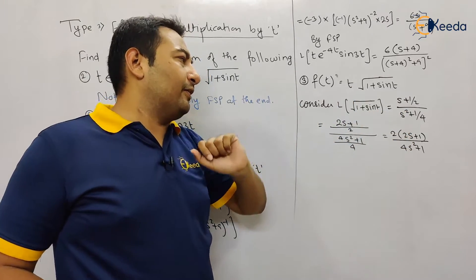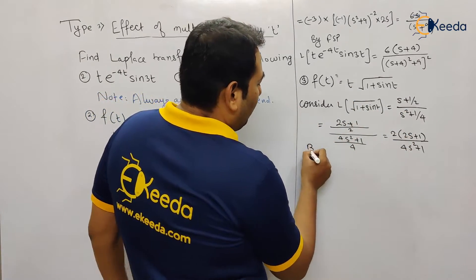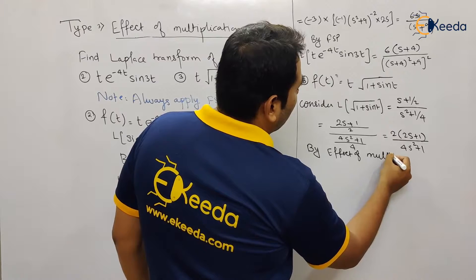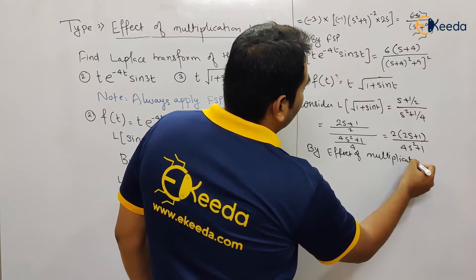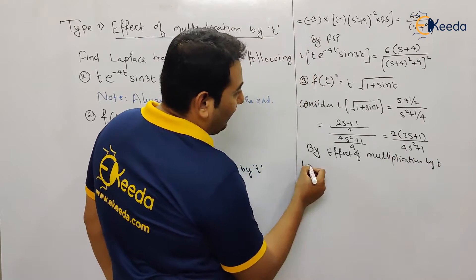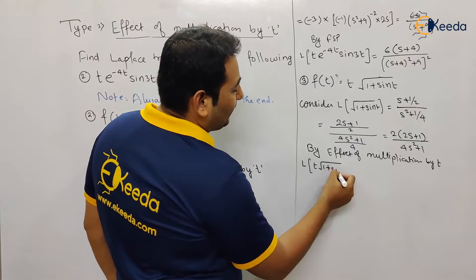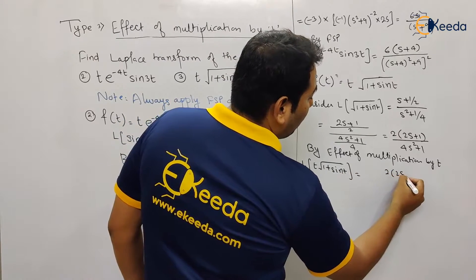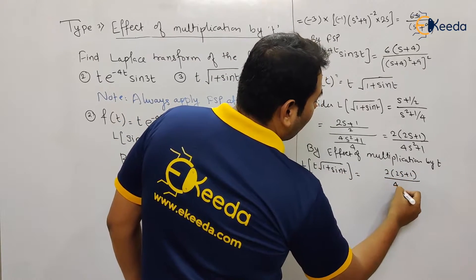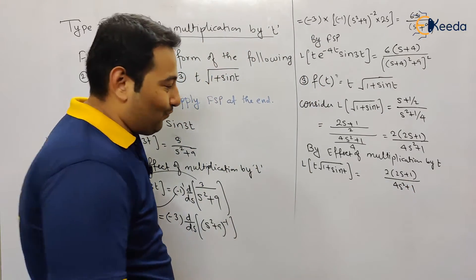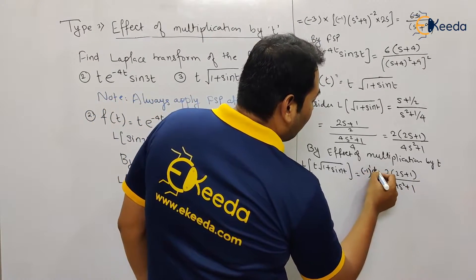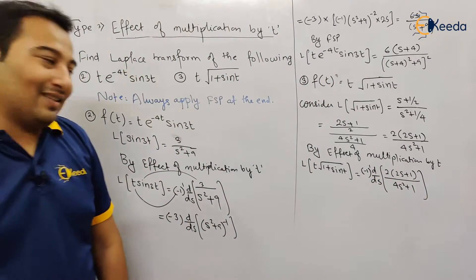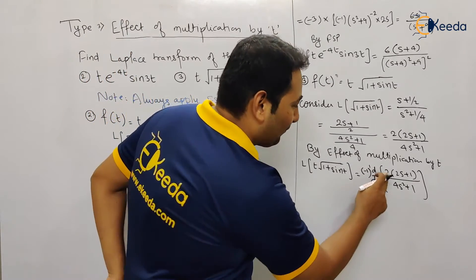By effect of multiplication by t, the Laplace of t·√(1 + sin(t)): the Laplace of √(1 + sin(t)) is 2(2s + 1)/(4s² + 1), and due to this t we apply (−1)^1 · d/ds — that means we're going to differentiate it once and we'll get our solution.